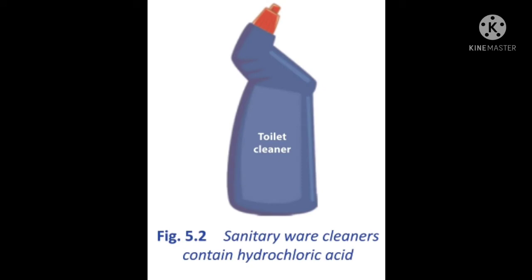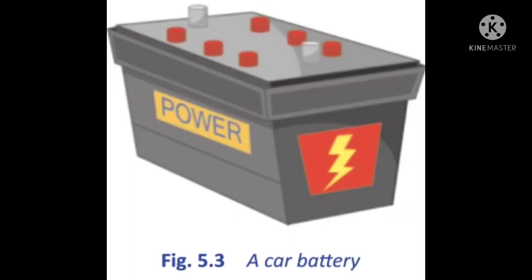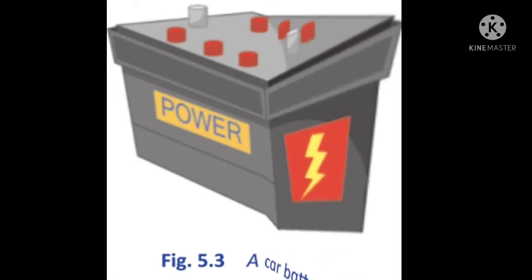We have learned about strong and weak acids. Mineral acids are mostly strong, while organic acids are weak. Acids are sour to taste and corrosive in nature. They are soluble in water. In dilute solutions, acids have more water, whereas concentrated acids have less water.